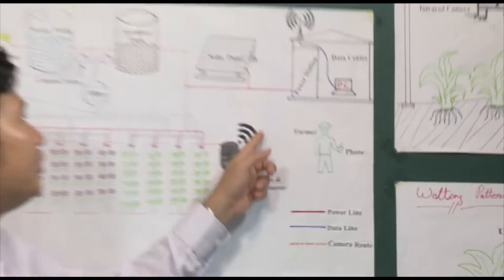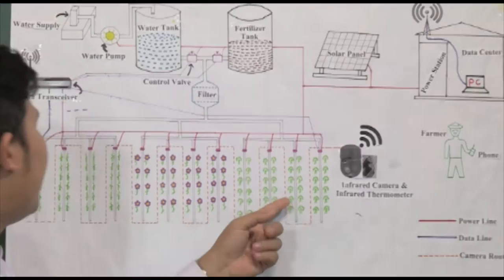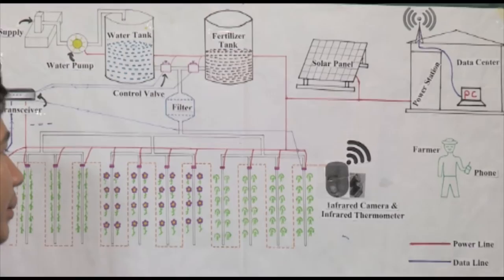These two data send to the data center by using wireless communication. The PC performs the image processing function and automatically determines the water stress and plant diseases and controls the water valve to improve efficient use of water supply.